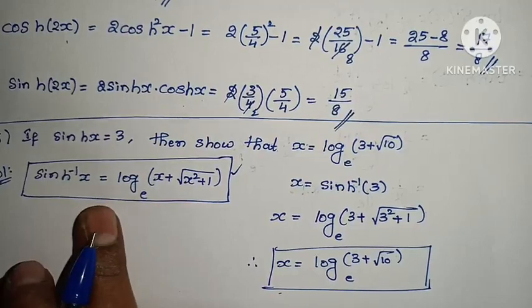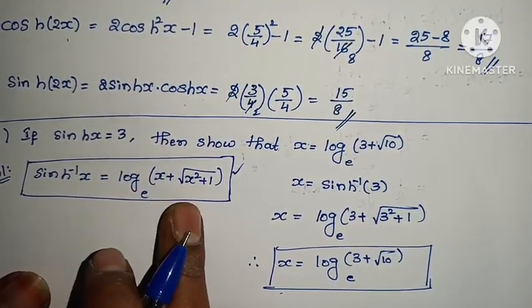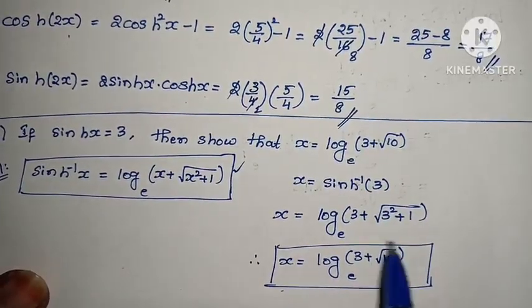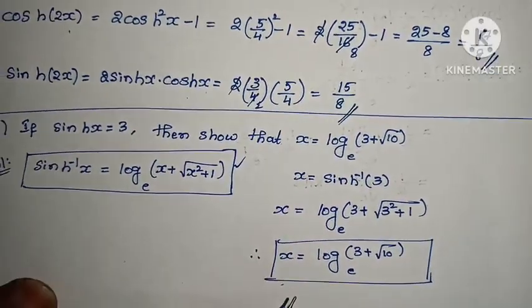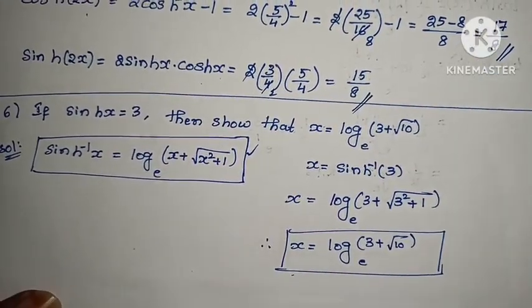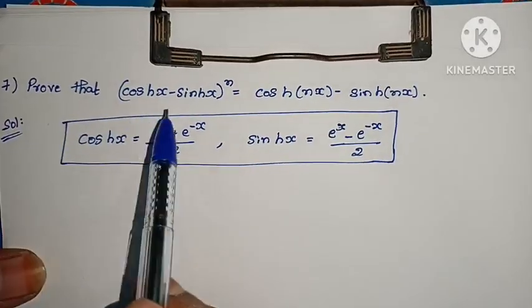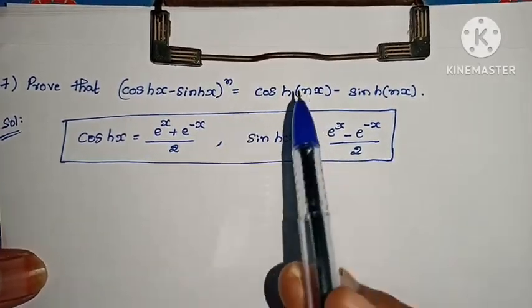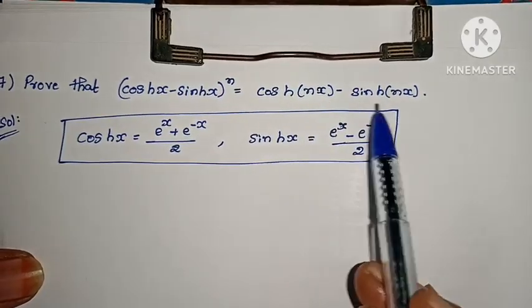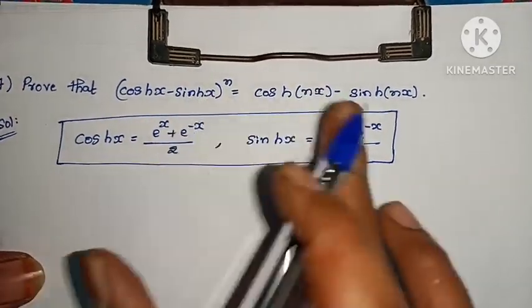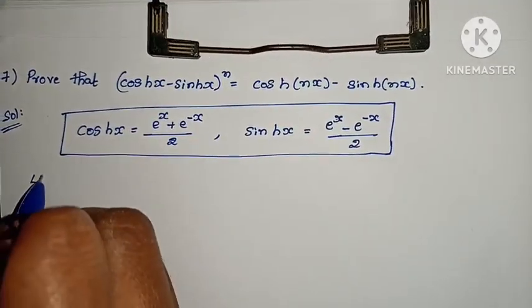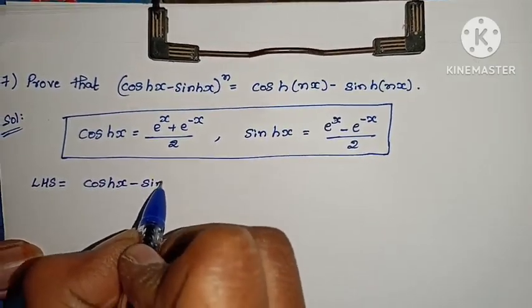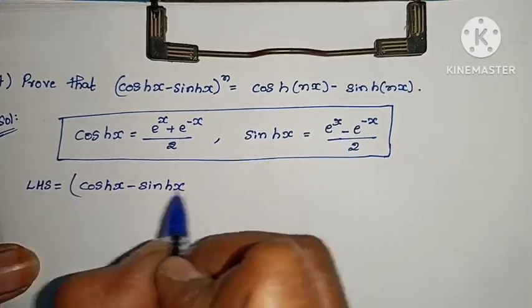The formula used: sinh⁻¹(x) = log(x + √(x² + 1)). Substitute 3 in place of x and the answer follows directly. Next question: prove that (cosh(x) − sinh(x))ⁿ = cosh(nx) − sinh(nx). We look at LHS first.